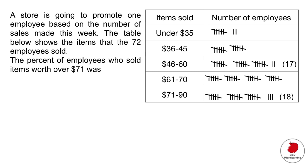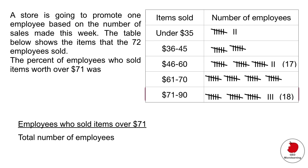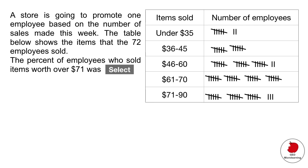What you want to do here is first look at that category. This is a frequency table so if you count those tallies up you can see it gives you different numbers. In the category $46 to $60 you have 17 employees, and in the category $71 to $90 you have 18 employees. The question tells you to find employees who sold over $71, so you take that number which is 18 and divide by the total number of employees which is 72. That gives you 25%, so that's the correct answer.